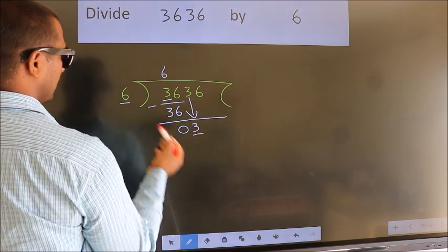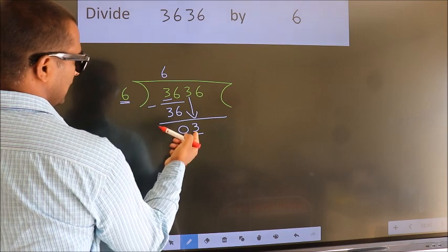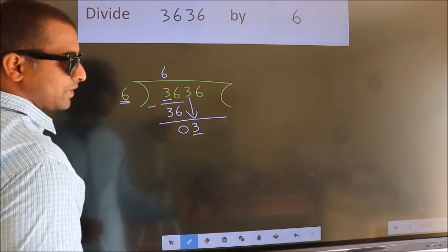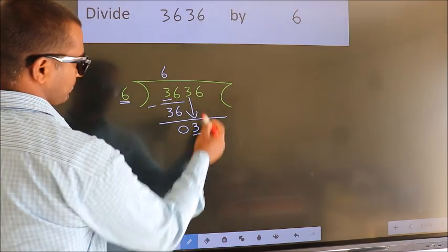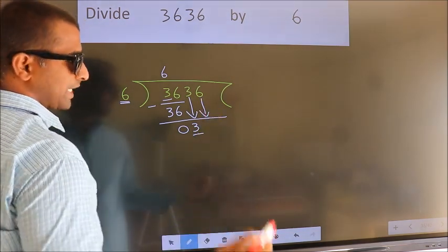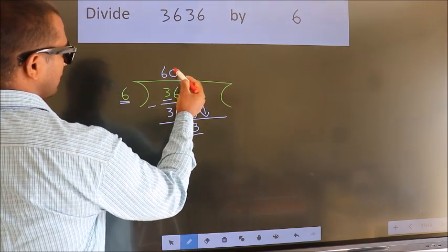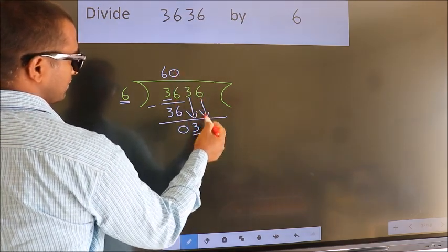Here we have 3. Here 6. 3 is smaller than 6, so we should bring down the second number. And the rule to bring down the second number is put 0 here. Then only we can bring down this number.